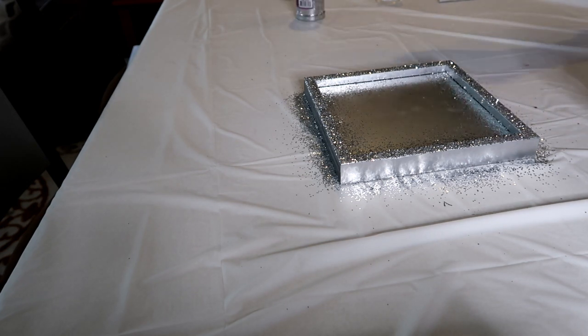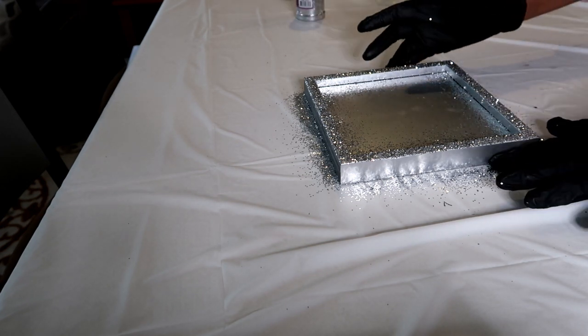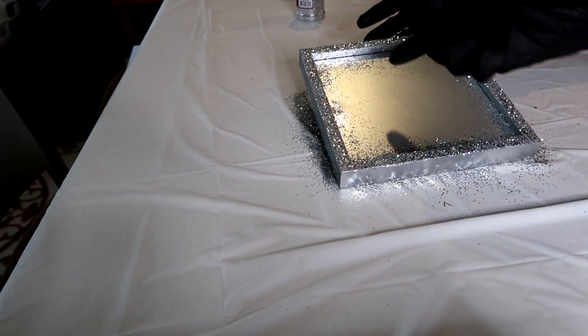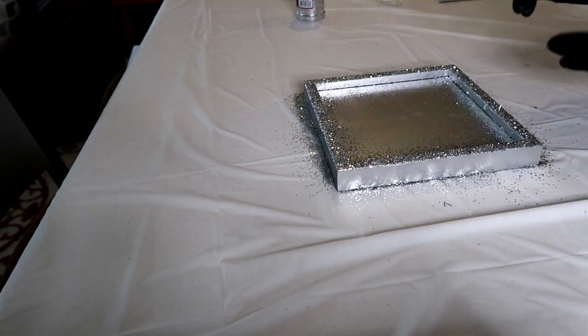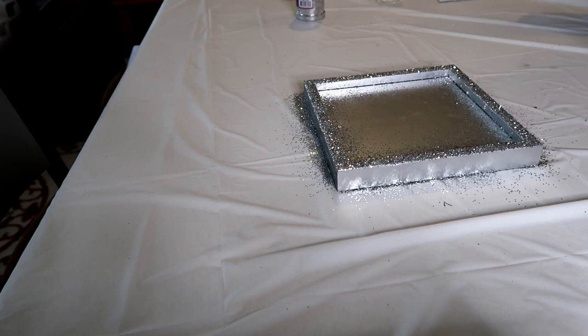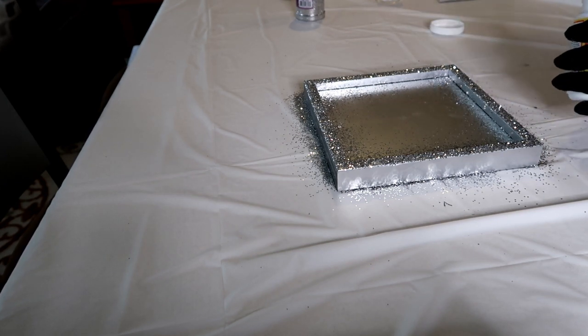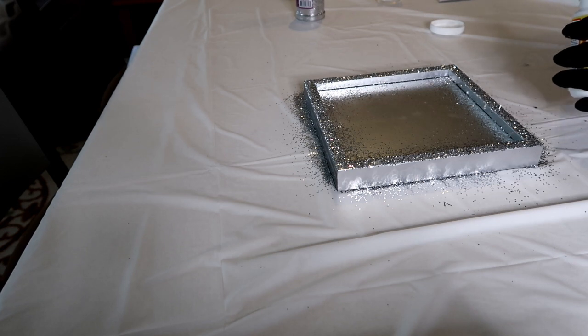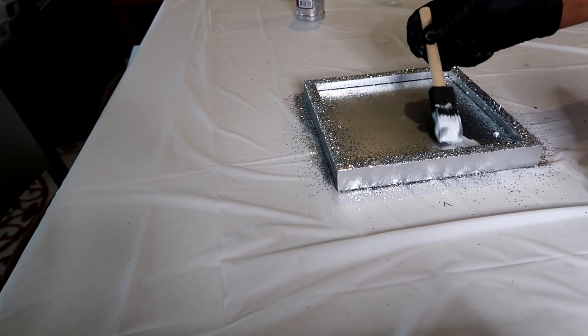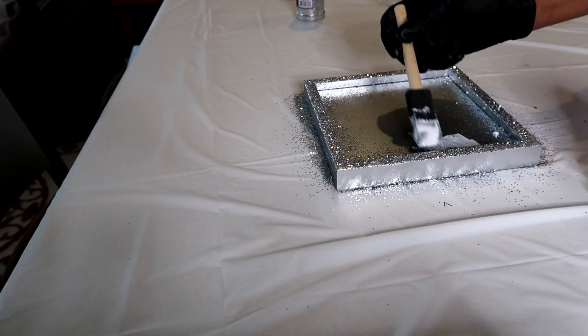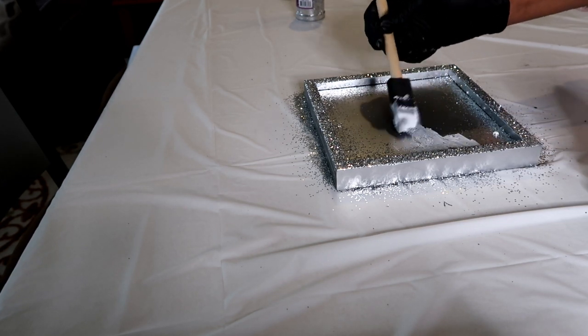A good thing about it is some of the glitter has gone inside of the tray and I want to have some of the glitter stick to the inside. So I'm going to use my Mod Podge again and I'm going to just attach the glitter that's on the bottom to the tray with my Mod Podge.